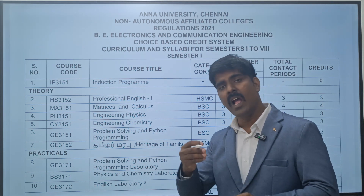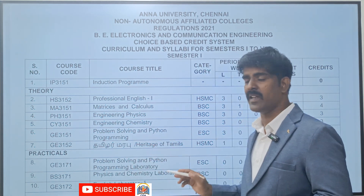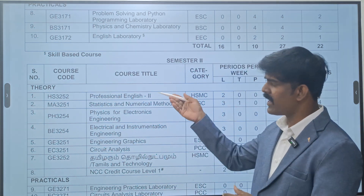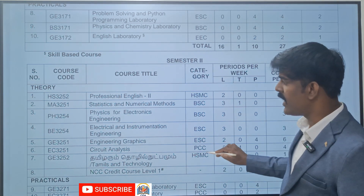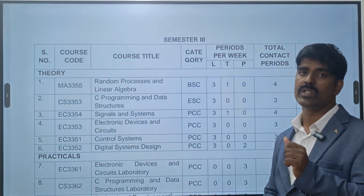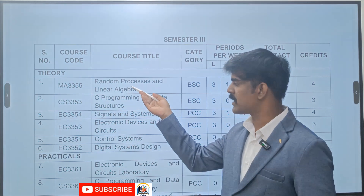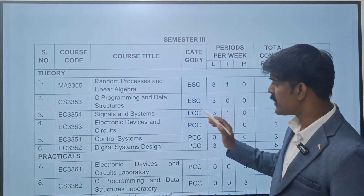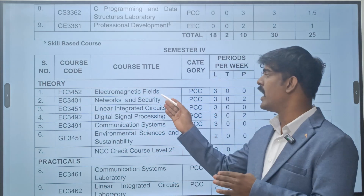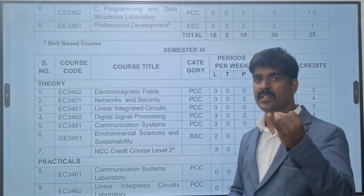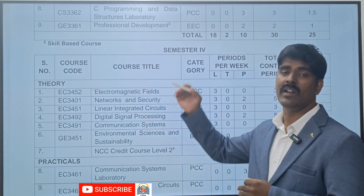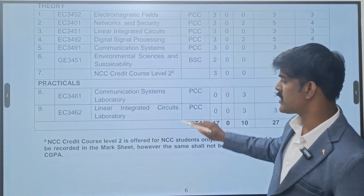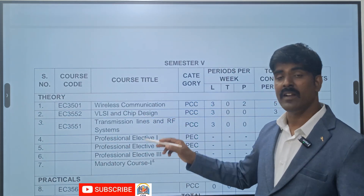Whether it is ECE or other departments like EEE or Mechanical, you will study a basic computer subject in the first semester. In the second semester you study electrical engineering, instrumentation, and circuit analysis. From the second year, third semester, your core subjects begin - for example signal systems, electron devices, control systems, and digital system design. In fourth semester you study EMF and subjects like digital electronics, LIC, and digital signal processing and communication systems.